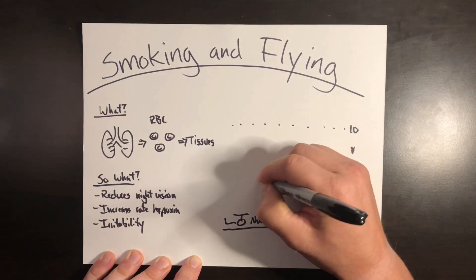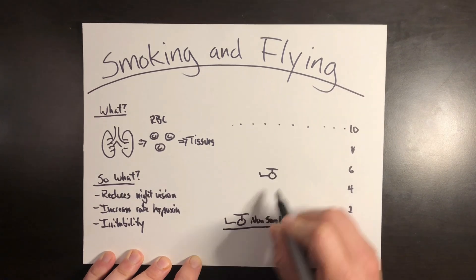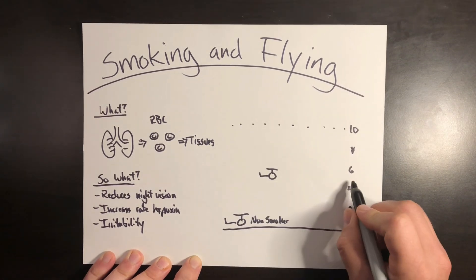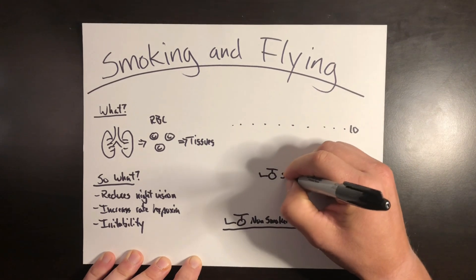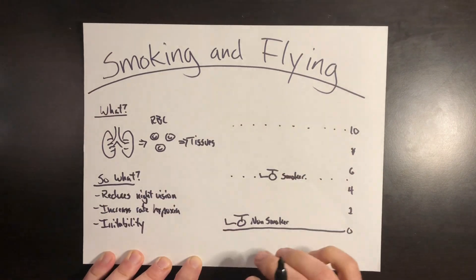What that means is a non-smoker may be starting at sea level, but a smoker may be starting at sea level, but physiologically, their body is acting like they're already at 5,000 feet. I'll just kind of mark that altitude right there.